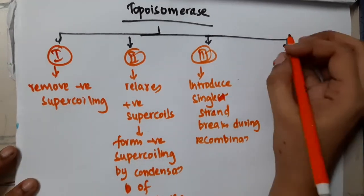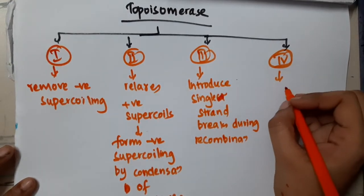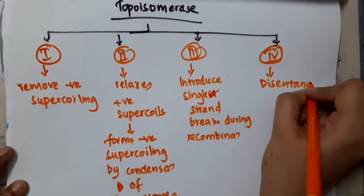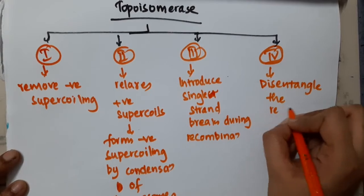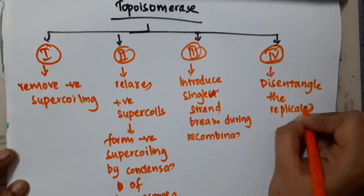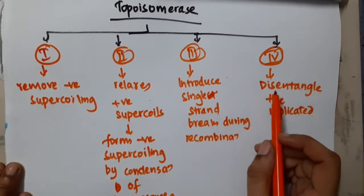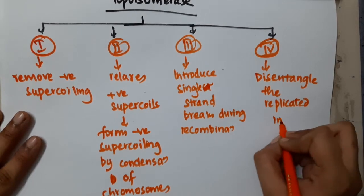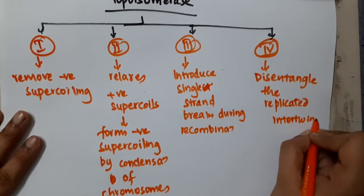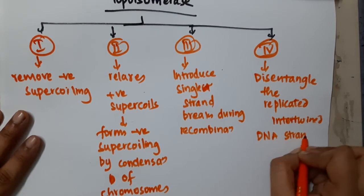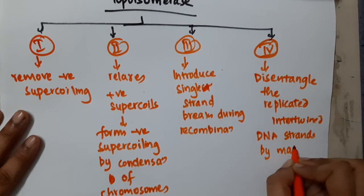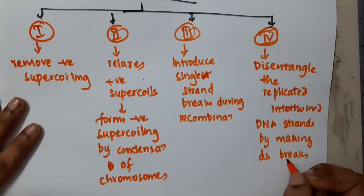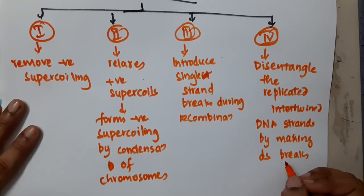Then we have topoisomerase 4. Topoisomerase 4 disentangles the replicated intertwined DNA strands by making double stranded breaks.